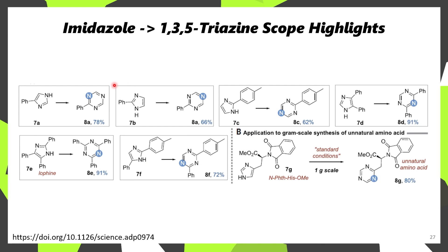When imidazoles are used, you instead obtain the corresponding 1,3,5-triazines. This worked on a wide range of different imidazoles, including on a protected version of histidine, which afforded an unnatural amino acid directly in 80% yield.